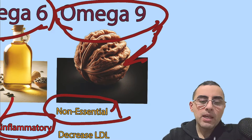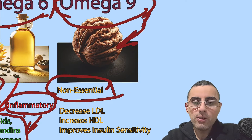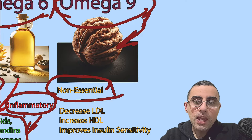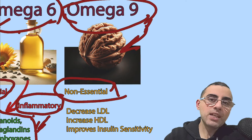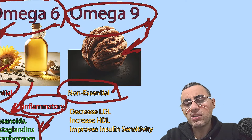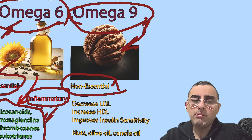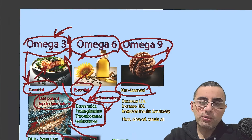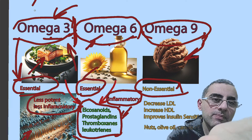Omega-9 fatty acids can be synthesized by our body in sufficient amounts. They have some important benefits: decreasing LDL (bad cholesterol), increasing HDL (good cholesterol), improving insulin sensitivity, and may be helpful for people with insulin resistance and risk of diabetes. However, it's not crucial since the body synthesizes it as needed. Nuts, olive oil, and canola oil also contain omega-9.